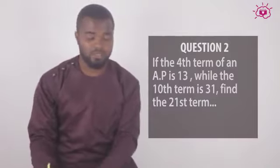We're given the fourth term. The formula for the fourth term of an AP is a plus 3d. We're told that the fourth term is 13 as our first equation.